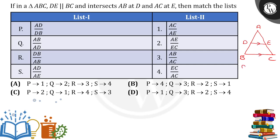So what I can apply here from basic proportionality theorem: if a line drawn parallel to one side of the triangle divides the other two sides in the same ratios. So I will get AD by DB is equal to AE by EC. So first one, AD by DB is equal to what? AE by EC. So P matches with 2.